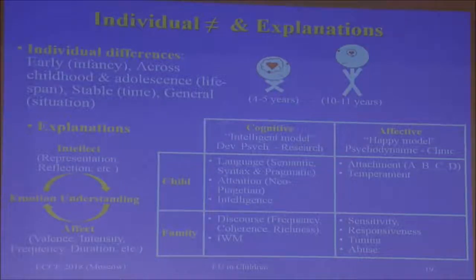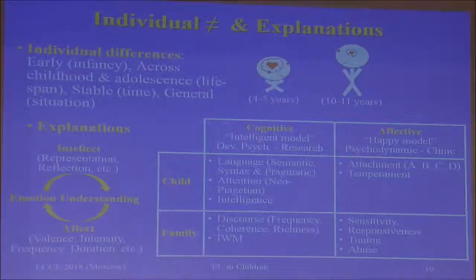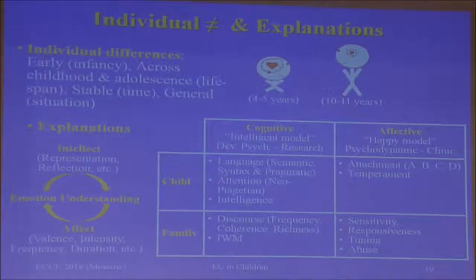There is the question of the explanation of this development and individual differences. Today there are two big models: one we call the cognitive model and the other the affective model. In the cognitive model, research shows that the language of the child — syntax, semantics, pragmatic competencies — is a very good predictor of the level of emotional understanding. It also shows that the narratives of parents, especially the mother, who has a rich vocabulary and speaks frequently and coherently about emotions, have a positive impact on the child's emotional understanding.